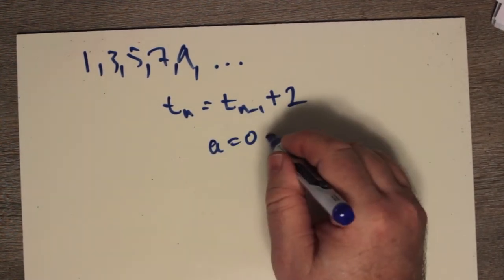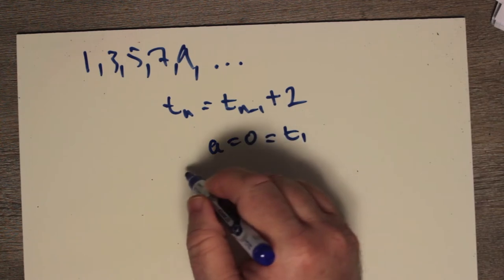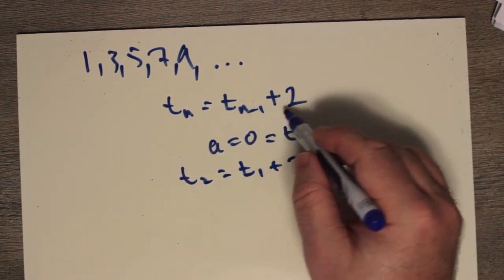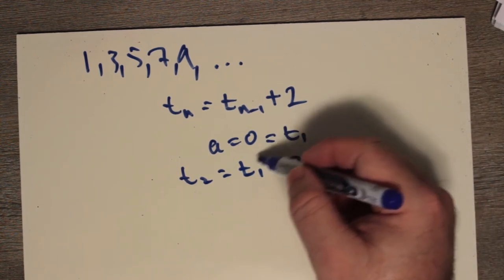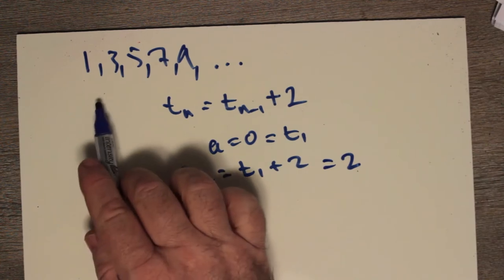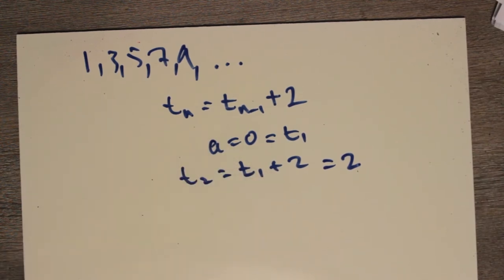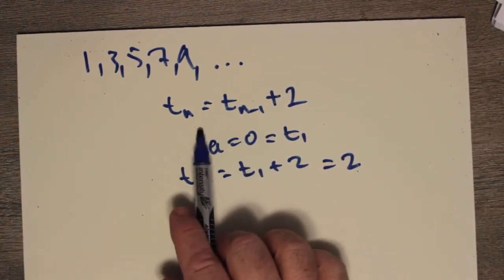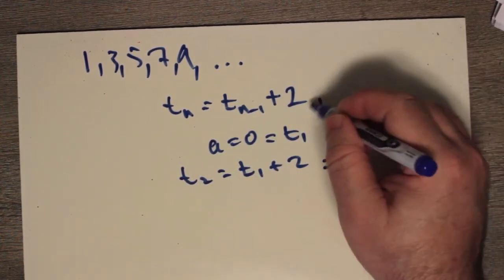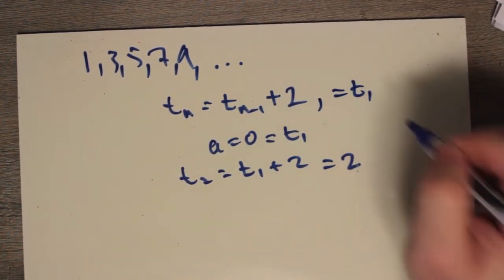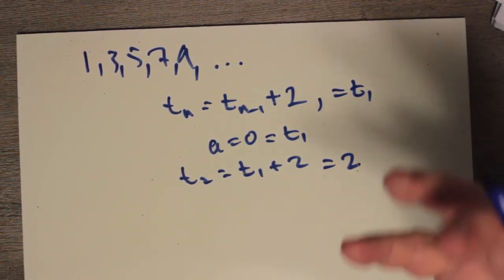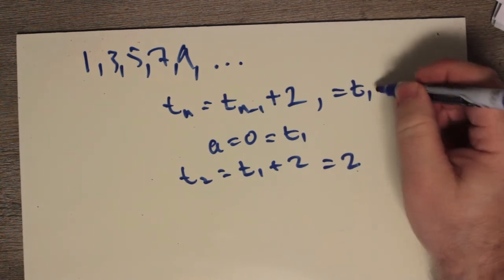I could say that the nth term equals the n minus first term plus 2, right? But if I don't tell you what the first term is, if I don't tell you that the first term is a 1, then I could say, let's say that the first term is 0. If my t1 was 0, then 0 plus 2 is 2. Does that occur in the sequence up here? No, it does not.